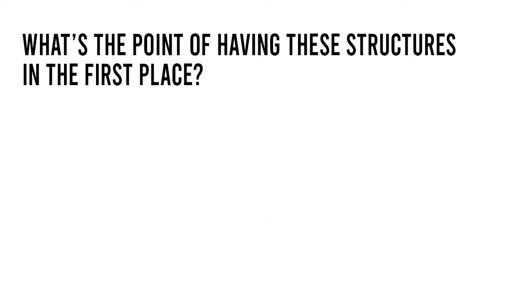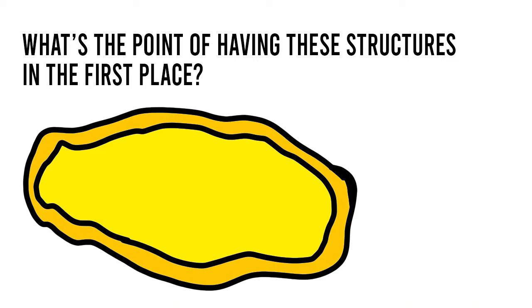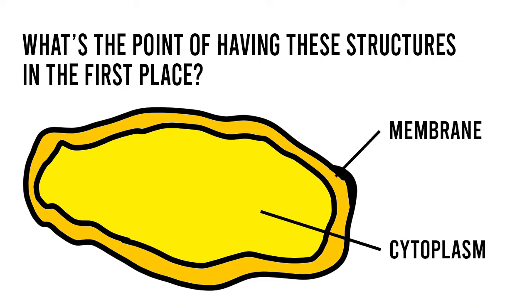Now you may be asking yourself, what's the point of having these structures in the first place? Part of the reason is because having structures such as a membrane or a cytoplasm creates micro environments which provide the necessary conditions and the surface area that maximize the cell's functional efficiency. Now we can see this happening when we look at these structures a little bit more closely.